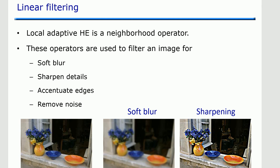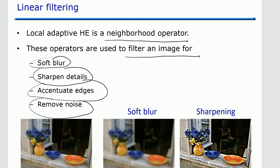In many applications, linear filtering is used as an image pre-processing technique, where local adaptive histogram equalization is a neighborhood operator. Operators used to filter an image include: soft blur, sharpening details, accentuating edges, and removing noise. Depending on the situation of the input image, the appropriate operation is selected. As shown here, image 1 is the original; image 2 shows blurring applied; and image 3 shows sharpening applied, where colors are more prominent compared to the input.